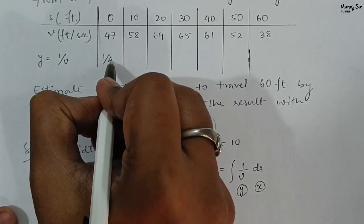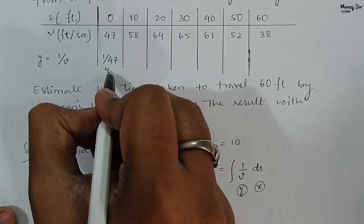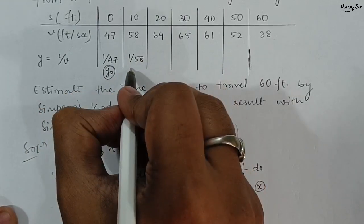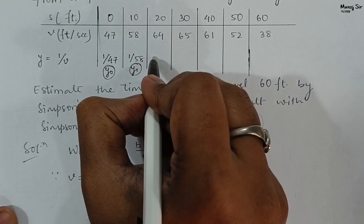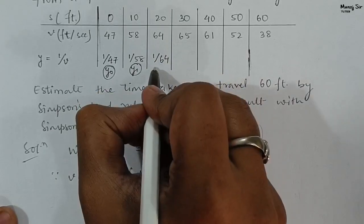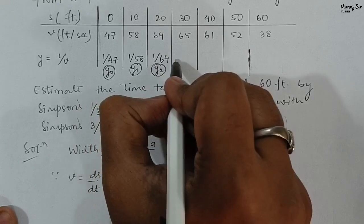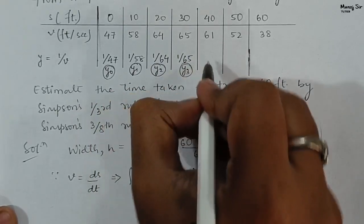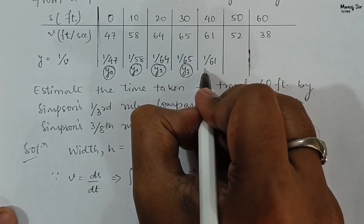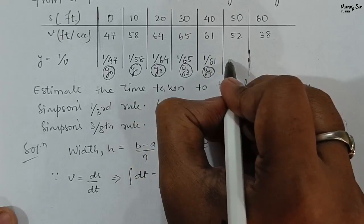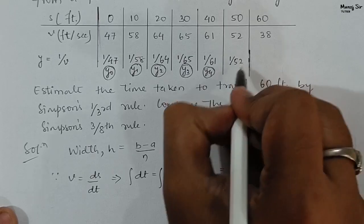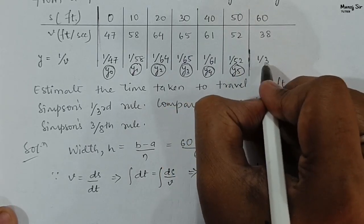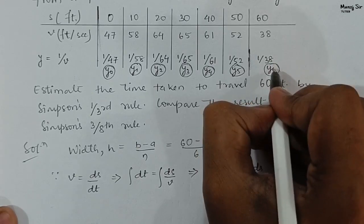The y values are computed as: y₀ = 1/47, y₁ = 1/58, y₂ = 1/64, y₃ = 1/65, y₄ = 1/61, y₅ = 1/52, y₆ = 1/38.